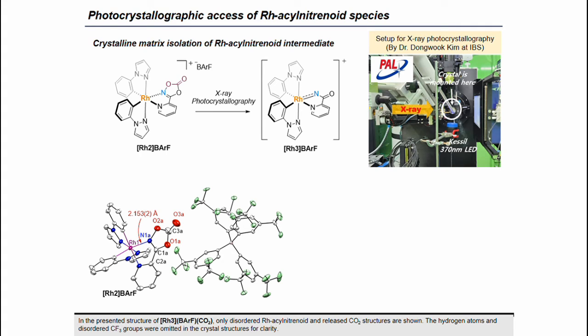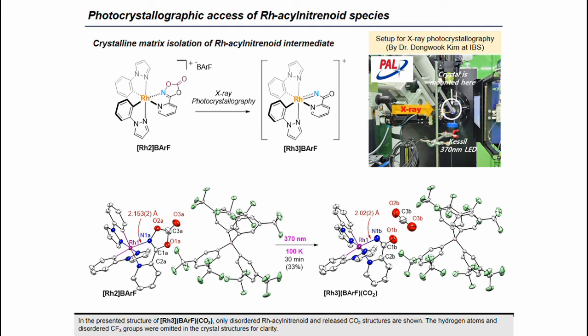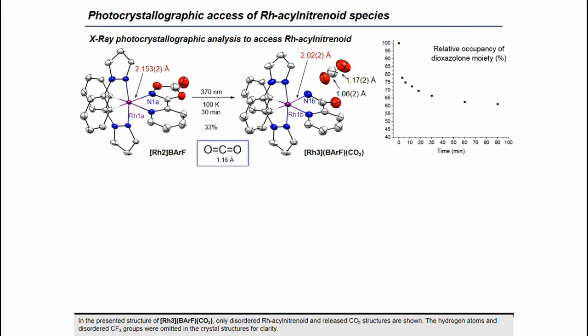Interestingly, when we subjected the Rh-2-BARF sample for the photocrystallographic experiment using a 370 nm light source, after 13 minutes of irradiation at 100 K, we were able to obtain the structure of the rhodium acyl nitranoid species, along with the extruded CO2 molecule residing between the two CF3 groups of the BARF anion. We observed significant contraction of the rhodium–nitrogen bond length from 2.15 to 2.02 Å. The C–O double bond lengths of the captured CO2 were 1.06 and 1.17 Å, matching the known C–O double bond length of 1.16 Å. Time-resolved X-ray diffraction showed decreasing occupancy of the original rhodium dioxazolone complex over time.